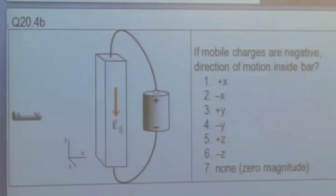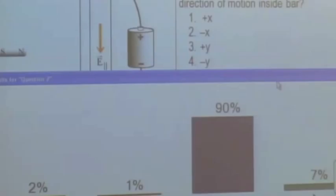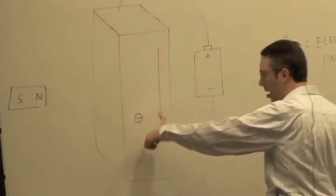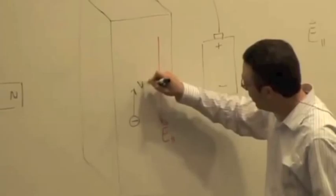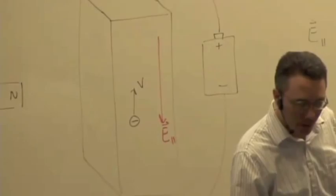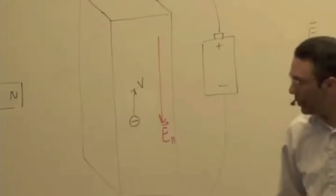We say that the mobile charges are negative. We now have electric field pointing downward. What is the direction of the motion of these negative charges inside the bar? We know that if these mobile electrons are negative, the electric field is down, so there's going to be a force upward on them driving them through, and the velocity will be upward.